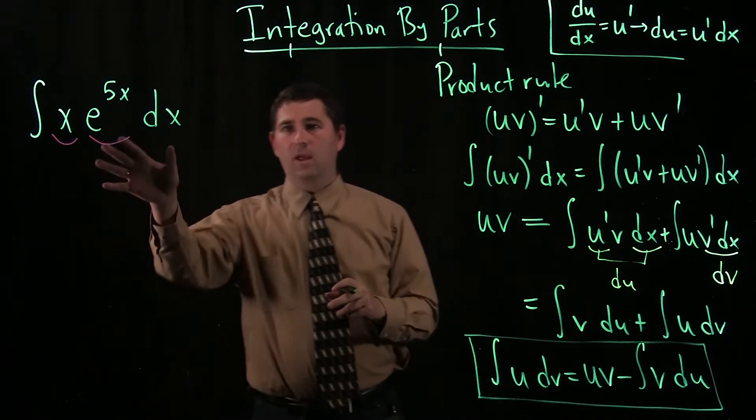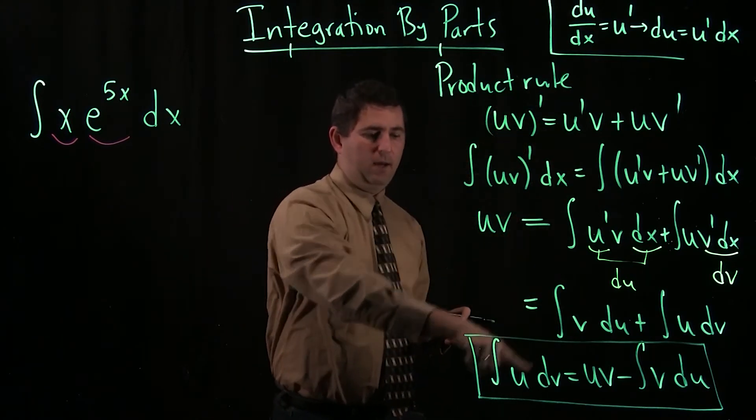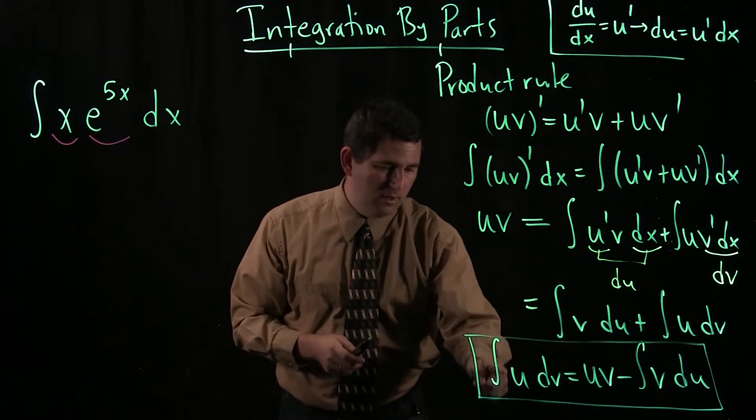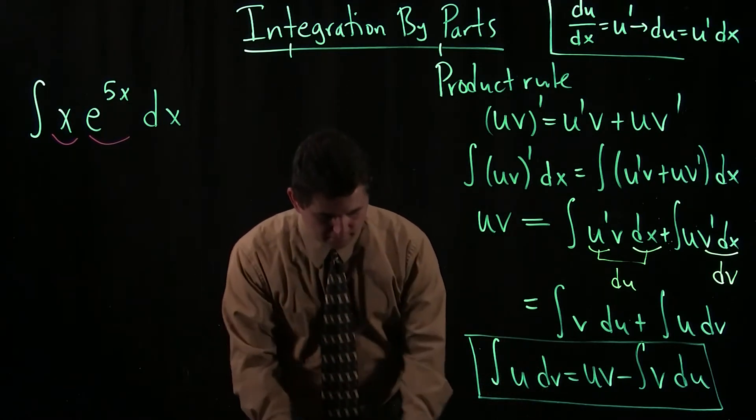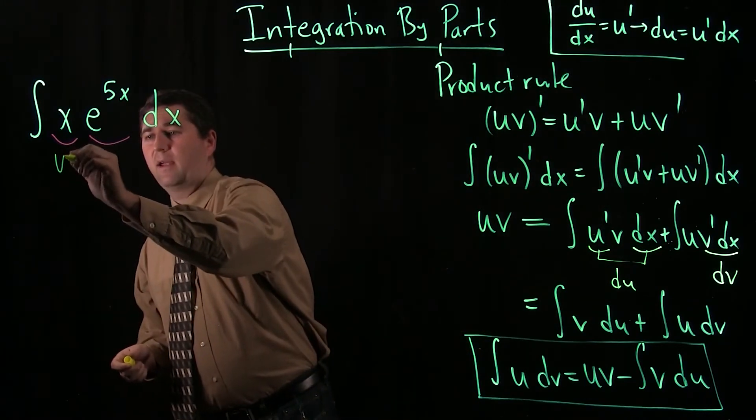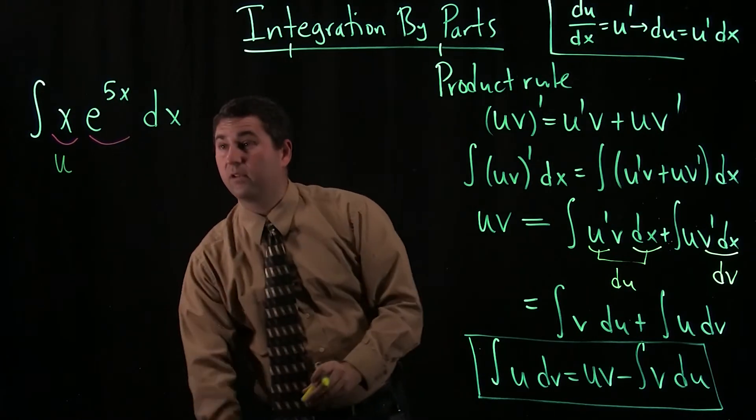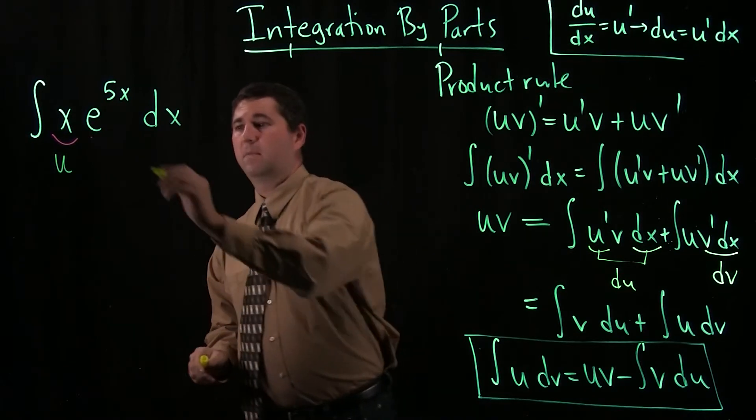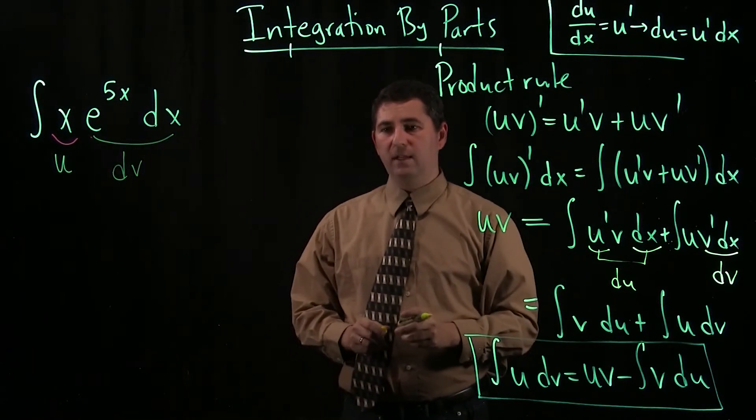Alright, let's see how it works with our example. Now, what we had to do, right, in our integration by parts formula is identify some portion as our u and some portion as our dv. So, over here, I'm going to assign x to be our u. And then the rest of this expression, e to the 5x times dx, that's what we're going to assign to be the dv.